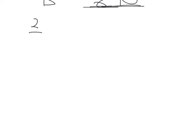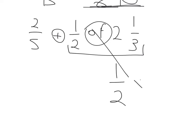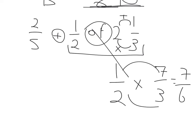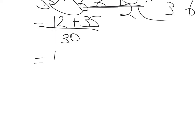Next one, we've got 2 fifths plus a half of 2 and a third. The first thing to realise is that 'of' means multiply. So we've got a multiply and an add, so we do the multiplication first. A half of 2 and a third: 2 times 3 is 6 plus 1 is 7, so 7 over 3. Multiply top and bottom: 1 times 7 is 7, over 2 times 3 is 6, giving 7 over 6. Then 2 fifths plus 7 over 6 using kiss and smile: 2 times 6 is 12, plus 7 times 5 is 35, over 5 times 6 is 30. 12 plus 35 is 47, so 47 over 30 — and it can't be simplified.